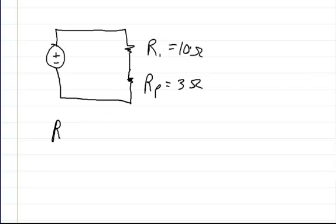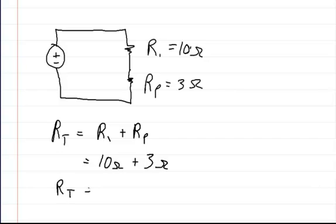So now we can just add them regularly as if they're in series. So now the total resistance is equal to R1 plus the resistance in parallel. So R1 is equal to 10 ohms plus Rp which is 3 ohms. So the total resistance of that circuit is equal to 13 ohms.